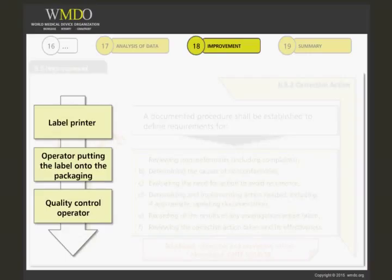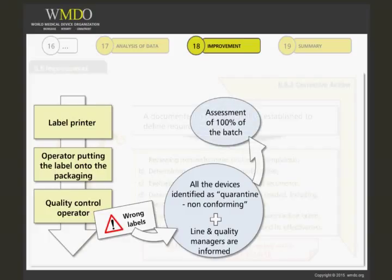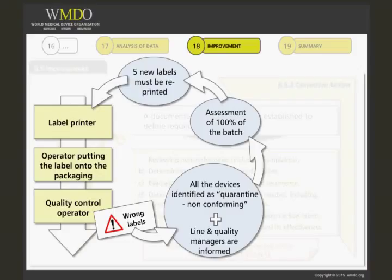The quality control operator detects that certain labels of the batch assessed are the wrong ones, related to another batch. He stops the line and identifies all the devices as quarantine non-conforming products. The quality control operator calls his line manager and the quality manager to assess the situation. According to their process, they initiate a CAPA procedure. After an assessment of 100% of the batch of 50 devices, the quality manager, the control operator, and the line manager determine that 5 labels out of 50 printed for the batch are wrong. They confirm it is only the wrong label — the products and the batch are the right ones. They decide to print 5 new correct labels and replace the wrong ones, so they can release the batch from quarantine and put it in the final goods store.